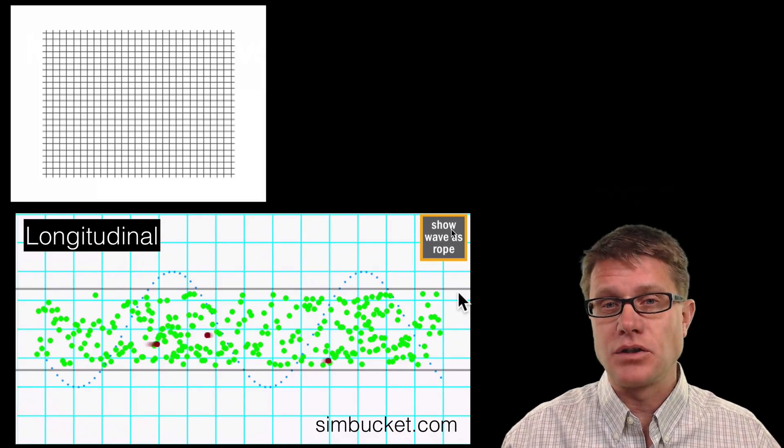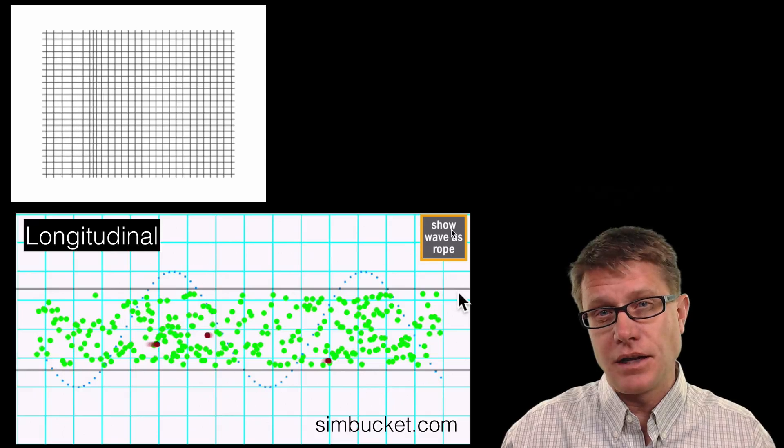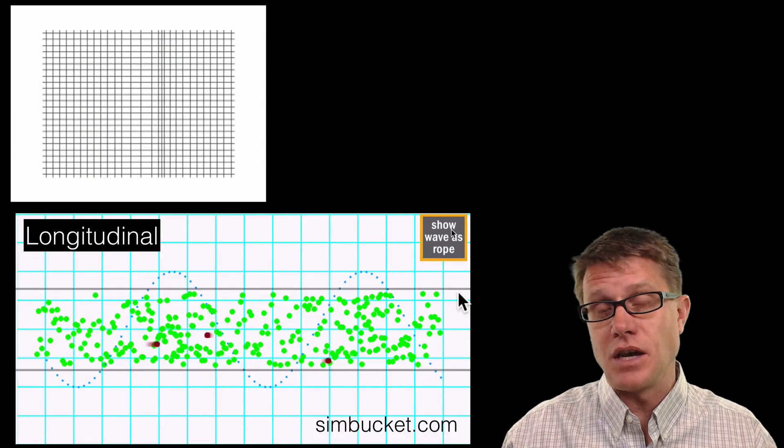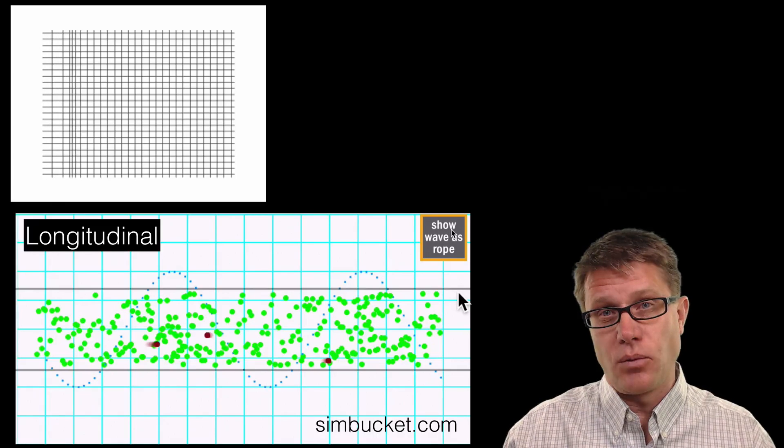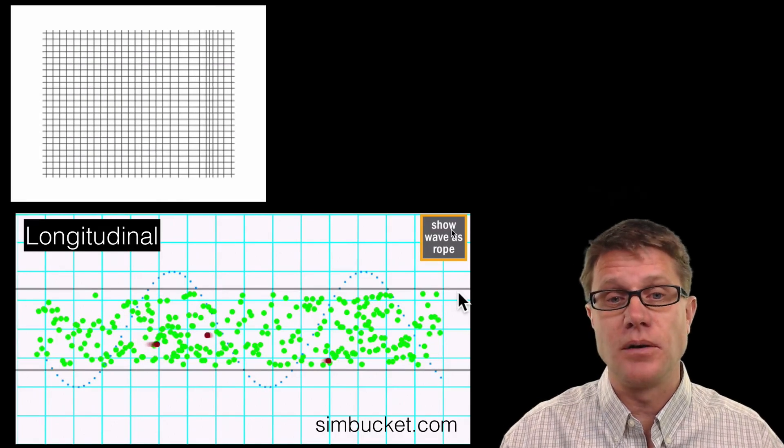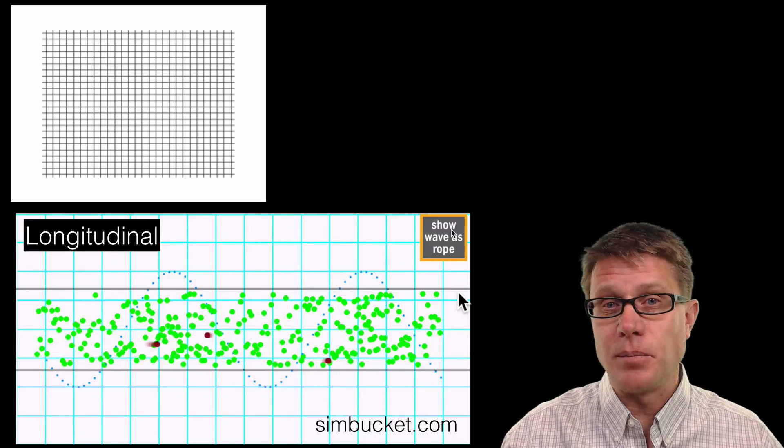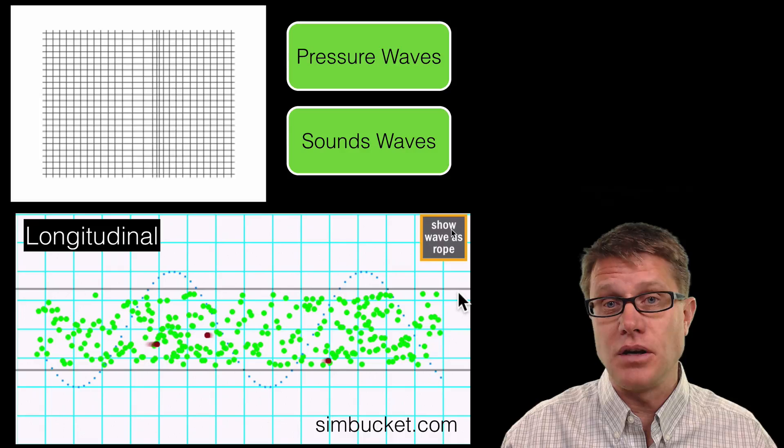And so the two types of waves are longitudinal. Longitudinal are waves where the oscillation or the disturbance is in the direction that the wave is moving. So you can see in this first animation that we have got the wave moving from left to right, and we also have the oscillations moving from left to right. An example of this could be a pressure wave, an example of that could be like the sound waves that you are hearing right now.